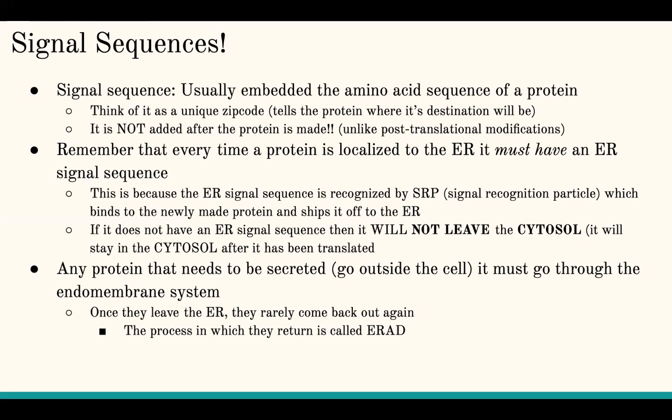Signal sequences are different from post-translational modifications because they're not a chemical group added after the protein has been made. Signal sequences are just a string of amino acids built into the protein itself — woven into its primary structure within the sequence of the protein. Every time a protein is localized to the ER, it has to have an ER signal sequence, because that sequence is recognized by the signal recognition particle, or SRP, which binds to the newly made protein and takes it to the ER.